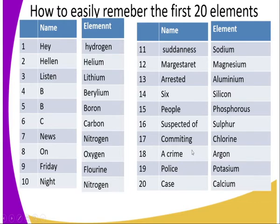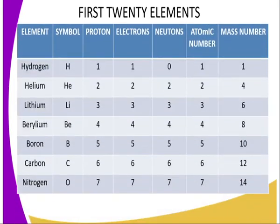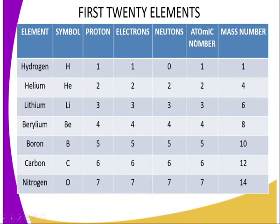You can use those mnemonic tricks to remember the first 20 elements. The elements are numbered according to atomic number, from hydrogen at atomic number 1 all the way to calcium at atomic number 20. We can list their characteristics: element name, symbol, proton number — which equals the number of electrons — neutrons, and mass number, which is the sum of protons and neutrons.